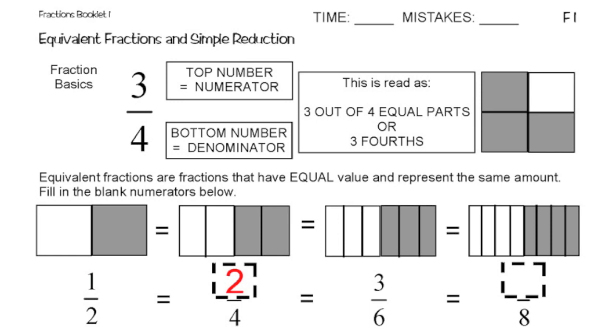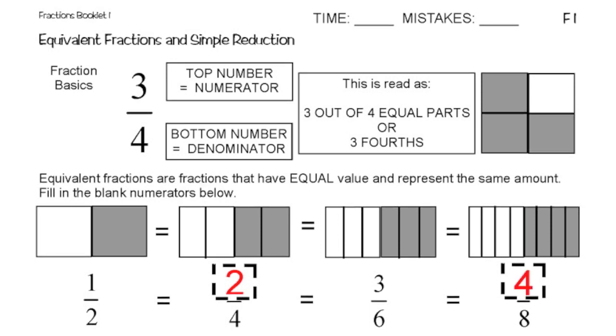Then you have 3 out of 6, which is basically if I had split the first one into 3 parts and the shaded part into 3 parts, I still have 3 equal shaded parts compared to my 3 non-shaded parts. So I have 3 out of the 6. And so following the pattern, that also would be 4 out of the 8.